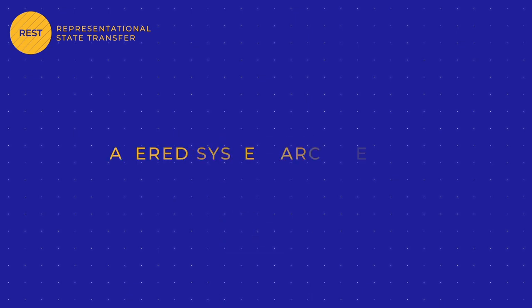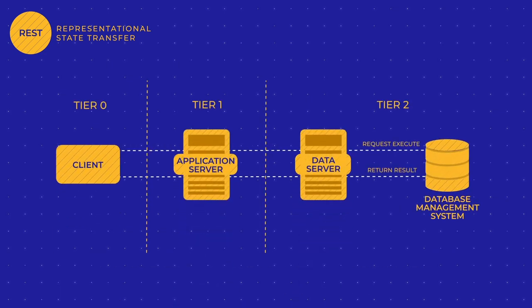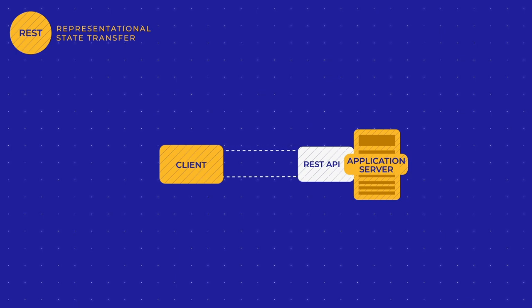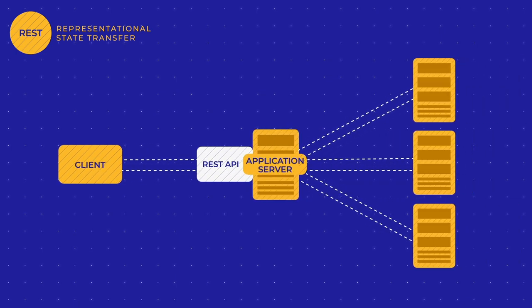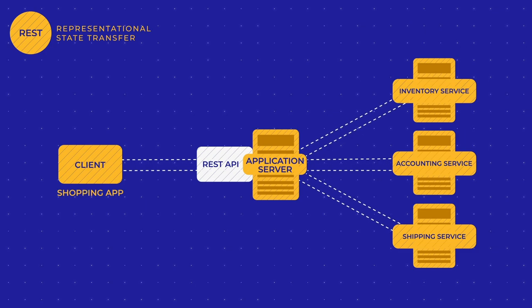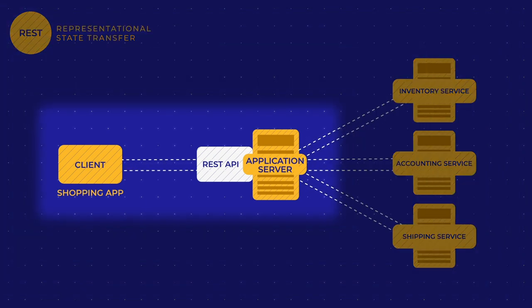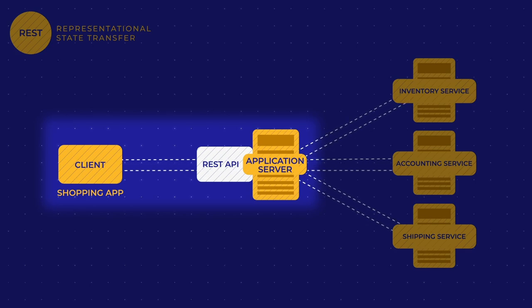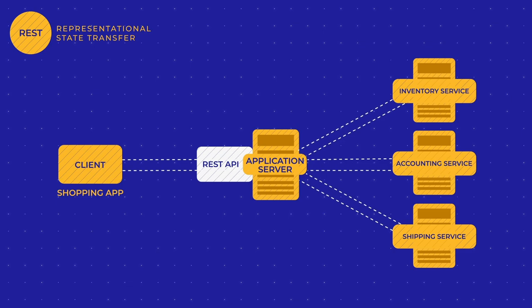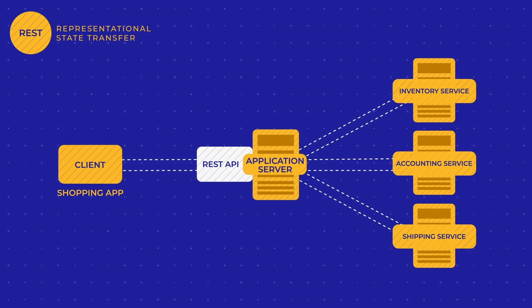The REST style also suggests a layered system architecture. In a classic three-tier architecture, a client makes requests to the application server that forwards them to the data server. When calling a server, a client doesn't know whether it's the end server or an intermediary. A server can hide a set of other servers behind it, which take part in producing a reply. The client only knows how to process the message the contact server returns, allowing for greater scalability on the server side.